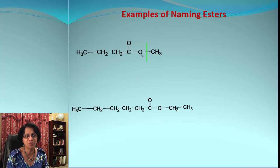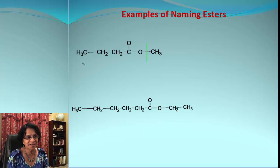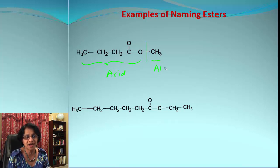Get the part which is the alkyl part — that comes after the oxygen from the carbonyl. You can clearly see that this part was actually coming from the acid, and this part was coming from the alcohol before our condensation reaction.